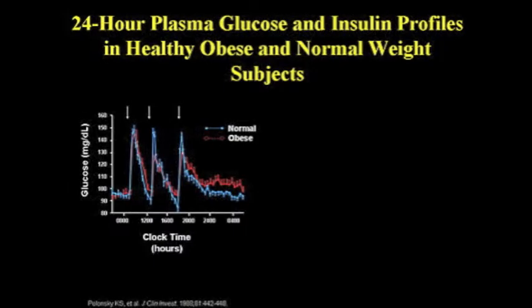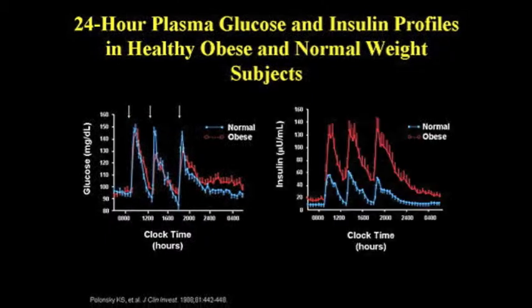As you can see here, in normal and obese individuals, blood glucose levels stay relatively the same, but in the obese individual, there is some elevation of circulating insulin levels, which is the graph on the right. This occurs because you need more insulin secreted to overcome insulin resistance and to maintain normal blood glucose.